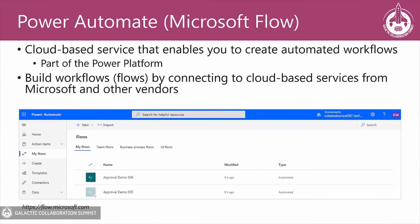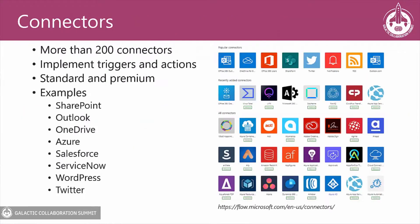Power Automate is part of the Power Platform. To build workflows — or as they're known in Power Automate, flows — you connect to cloud-based services from Microsoft and other vendors. You connect to these services using connectors, of which there are more than 200 available. Each connector implements a set of triggers and actions, topics which we'll discuss further throughout this session.